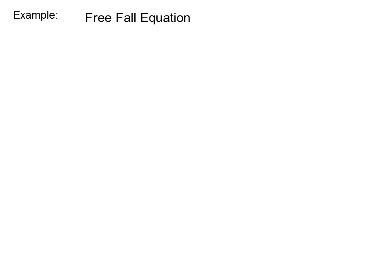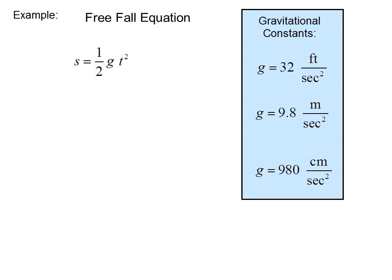The free-fall equation, S equals one-half g T squared, where S is position. Commonly used gravitational constants are G equals 32 feet per second squared in the United States, and for the rest of the world, G equals 9.8 meters per second squared, or G equals 980 centimeters per second squared.